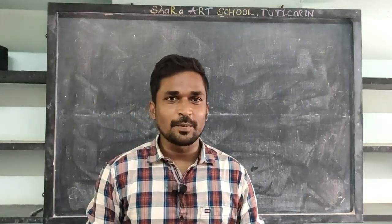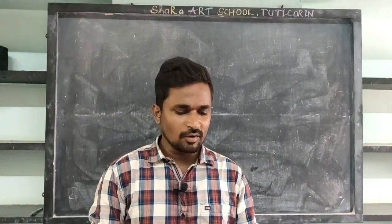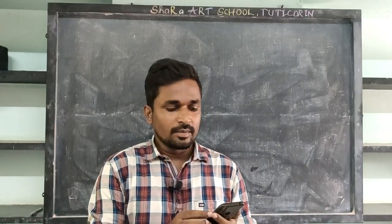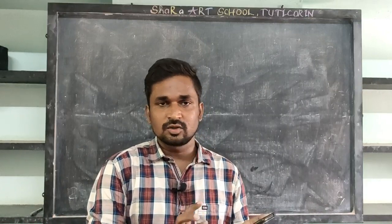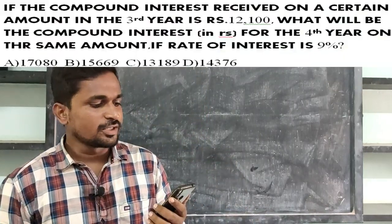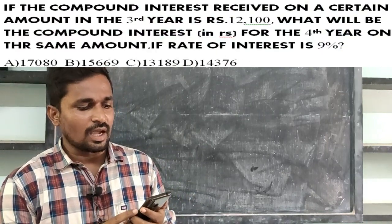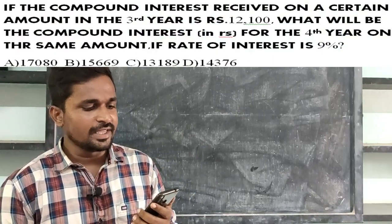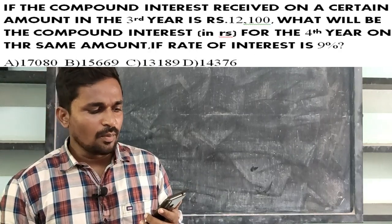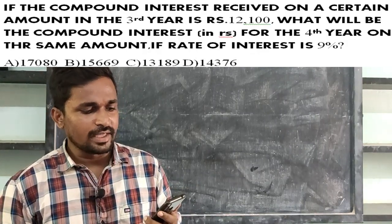Hi friends. If you want to talk about the topic of compound interest, we will talk about an advanced question but a simple method. If the compound interest is zero in a certain amount in 3 years — 12,100 — what will be the compound interest in rupees in the 4th year?